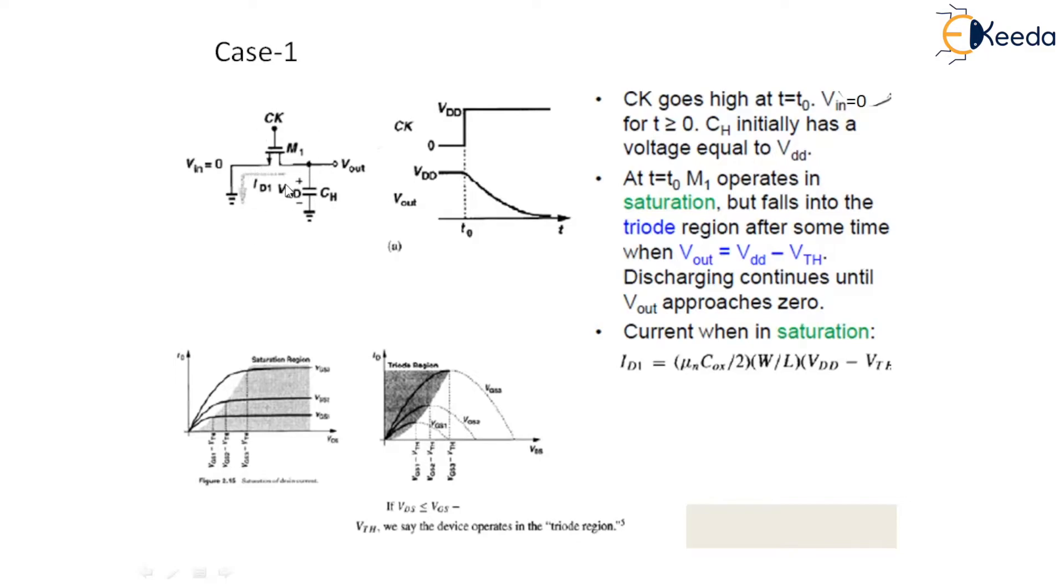Therefore this transistor M1 operates in the saturation which draws a current of ID1 equals to μn Cox by 2 W by L VDD minus VTH whole square. And from this capacitor, it draws a current from this capacitor. And as this Vout as shown in the figure, it falls at some point equals to Vout equals to VDD minus VTH, it drives this M1 into the triode region.